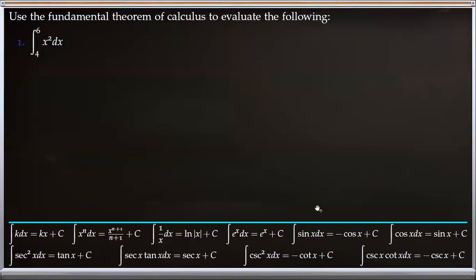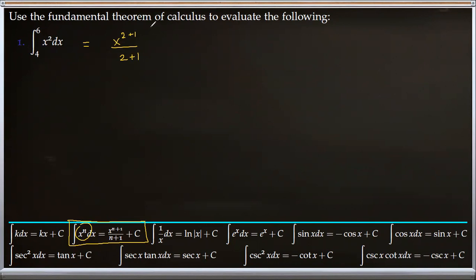Let's look at some examples. First we have the integral of x² from 4 to 6. The first step is to find the antiderivative of x², and for that we use the power rule formula. Comparing x² with xⁿ, our n is 2. So it becomes x^(2+1) divided by (2+1), evaluated from 4 to 6. Simplifying, we get x³ over 3, evaluated from 4 to 6.